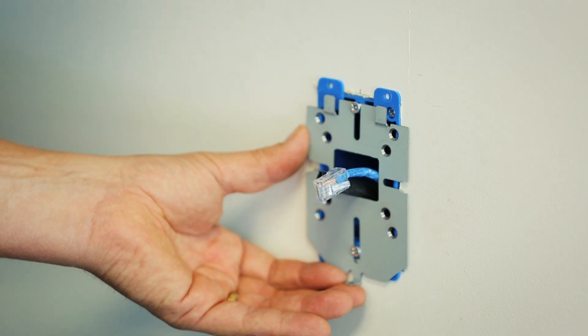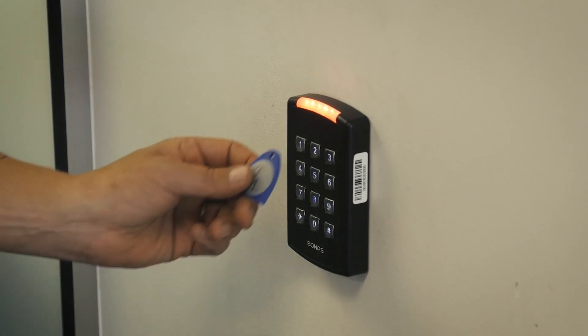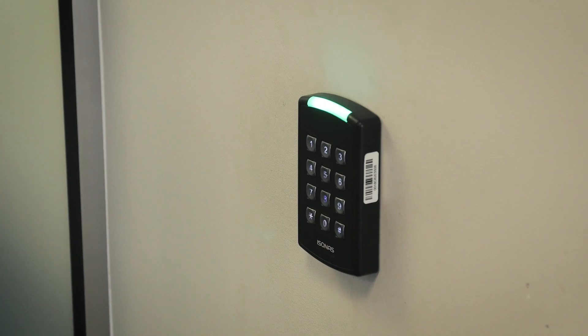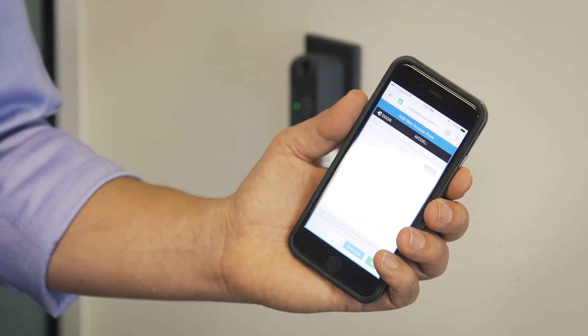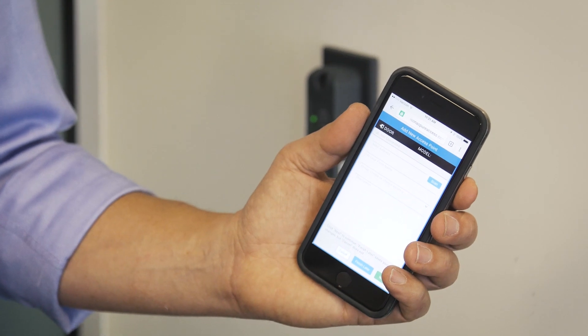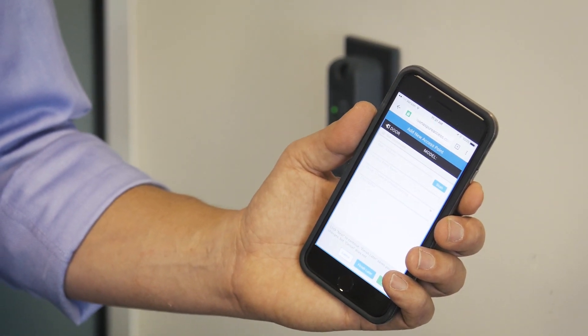Once the reader is installed and has power, connecting it to the software platform is quick and easy. Our Pure Access Cloud software platform is equipped with a configuration wizard that allows you to connect the reader to the network and check all the wiring in a series of simple tests.